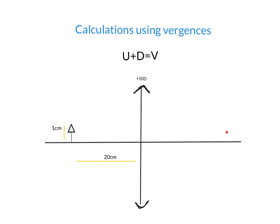The way you calculate this is using vergences. You can also use ray tracing, but that takes more time and is a lot harder in my opinion. To do calculations using vergences, you can use this equation: U plus D equals V. Some textbooks have it as L plus F equals L prime, but the concept is the same.